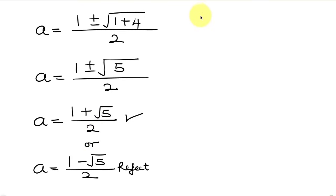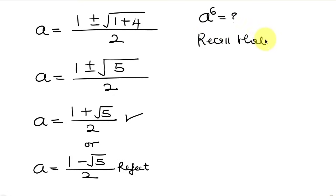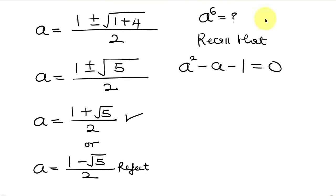We want to find A to the 6. Let's go back to our original question. We achieve A to the 6 when we have A cubed and then raise it to the power of 2, because from indices, multiplying the powers 3 times 2 gives us 6. So the trick we'll use is: first find A cubed, then raise that to power 2.